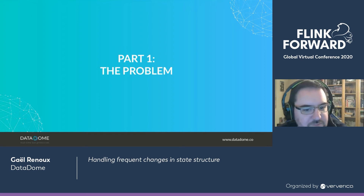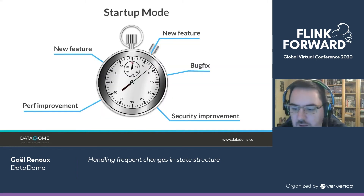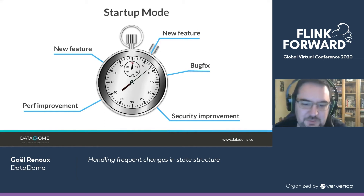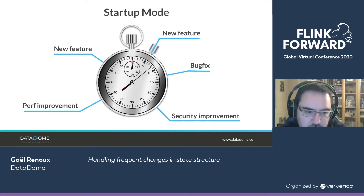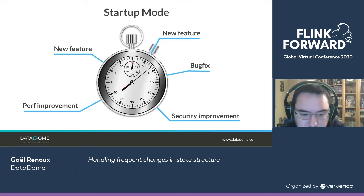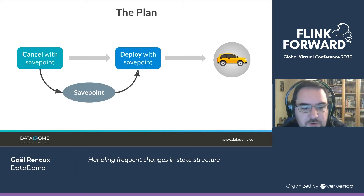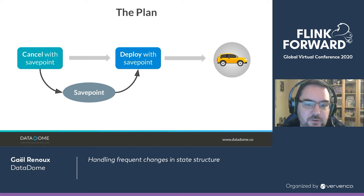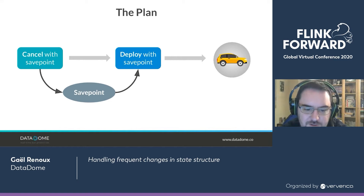So what was our problem? We're a startup in cybersecurity, which means we have a pretty hectic development cycle. We add new features and improvements extremely frequently — a week without deployment in production is pretty unheard of. Usually our deployments go as I guess it goes for most of you: we cancel the job with a savepoint, redeploy the new version with a savepoint, and everything's fine.